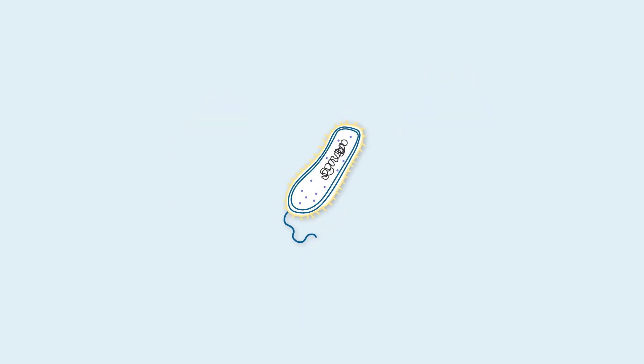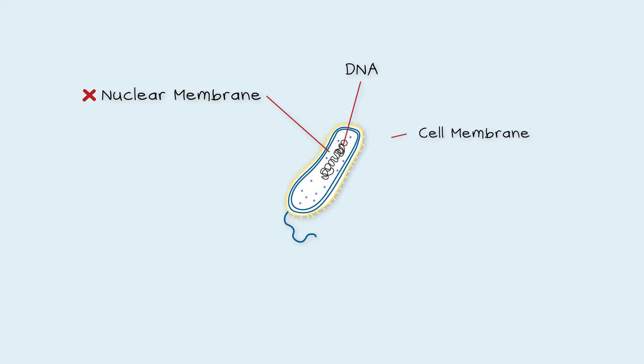This is a bacterial cell, which is a prokaryote, meaning before the nut. So it has no nuclear membrane and the DNA is floating free in the cytoplasm, which is surrounded by a cell membrane. For added protection, it has an extra two layers, a cell wall and a capsule. To help them move around, some bacteria have a flagellum, which acts like a propeller,